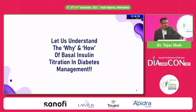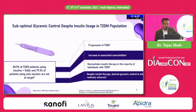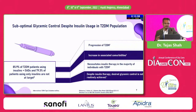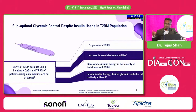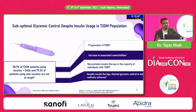Let us understand the why and how of basal insulin titration. Titration inertia exists and titration is a problem. The best possible time to titrate the dose is the first 12 weeks after you start insulin therapy. From the time of initiation up to 12 weeks is when the maximum change in fasting sugar and HbA1c is recorded if you titrate the dose well.